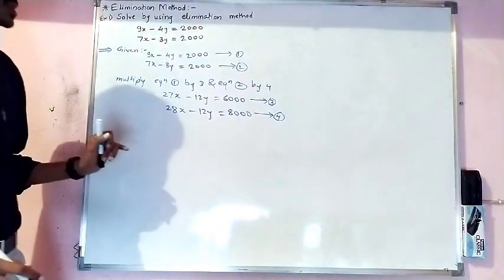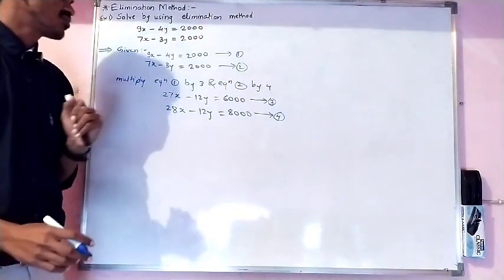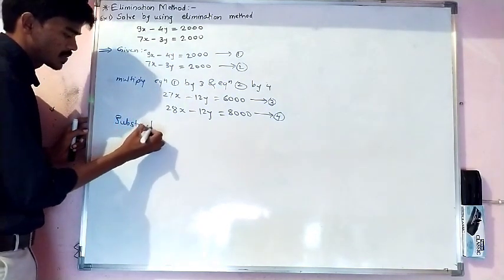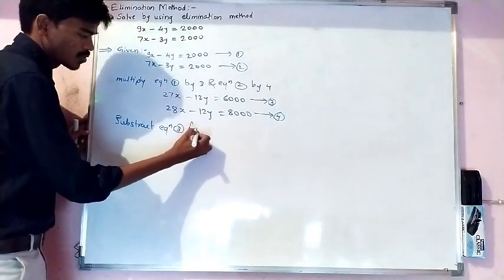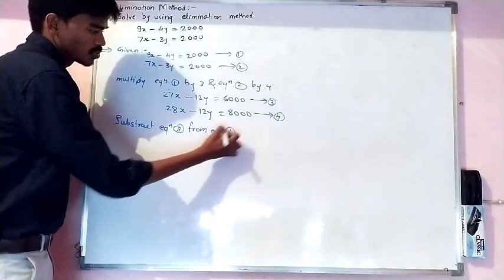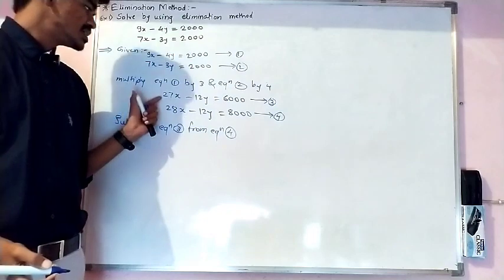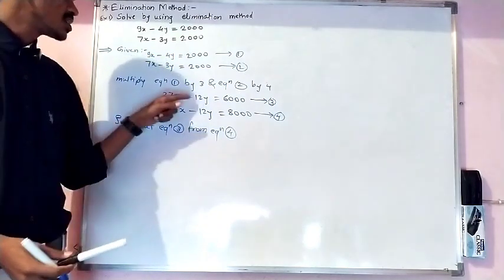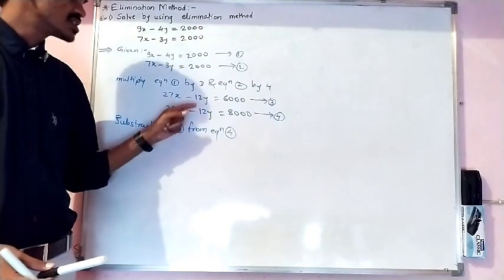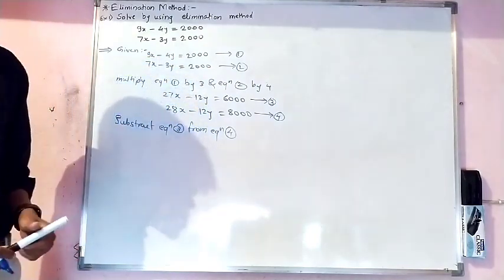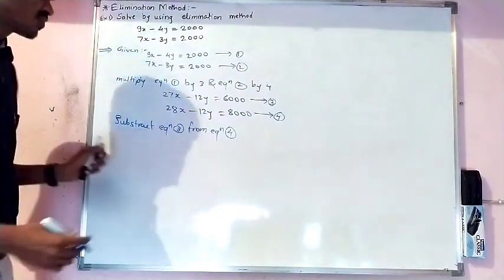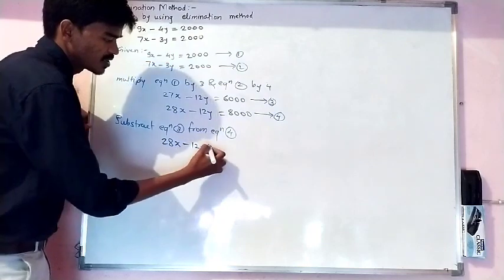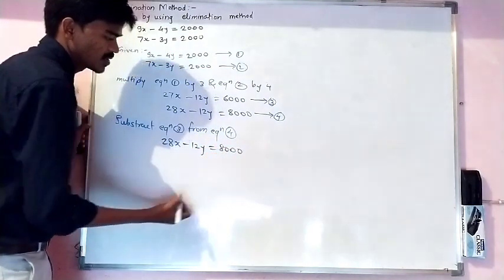Now we need to subtract equation 3 from equation 4. We do this because we need to eliminate one variable whose coefficients are the same. In this case, the y variable has the same coefficient of 12 (both minus 12), so we can eliminate y. Writing equation 4: 28x minus 12y equals 8000.